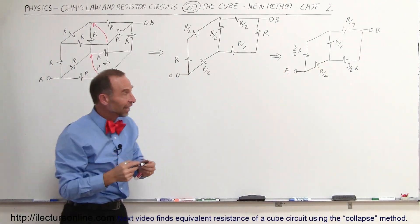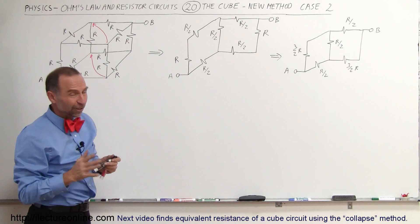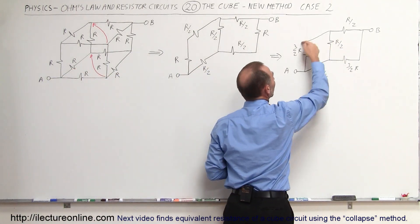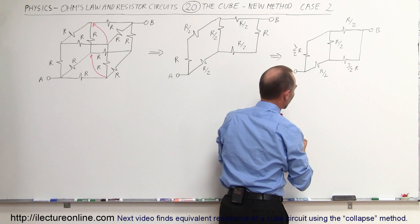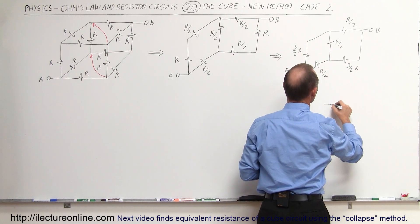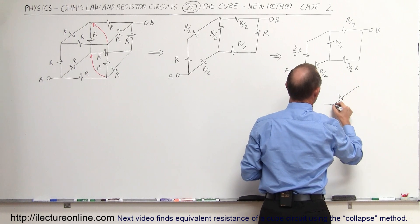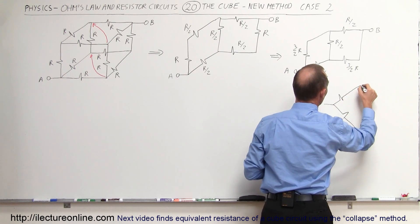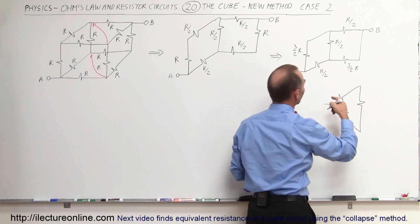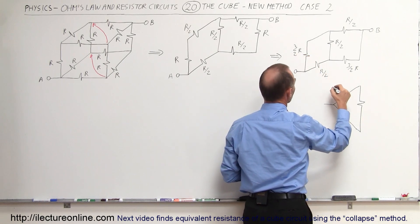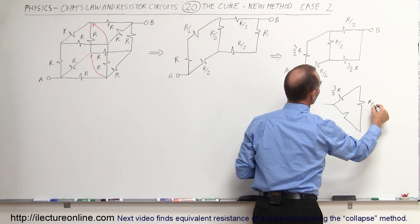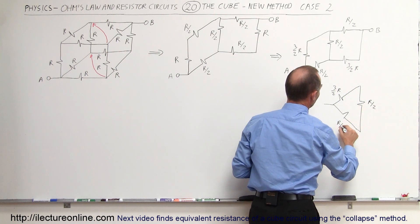So now we have a simplified flat circuit. If you notice that these three combined here form a delta circuit — in other words, these three kind of look like a very typical delta shape. That's called a delta circuit because it has a delta shape. So this would be 3/2 R for this one, this one would be R/2, and this one would be R/2.